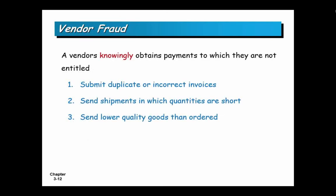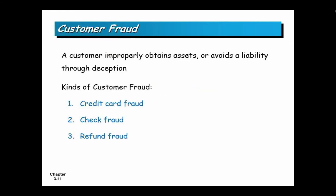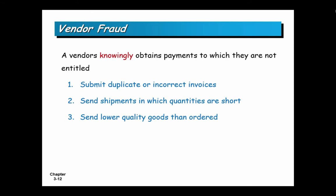Vendor fraud is when a vendor knowingly obtains payments to which they are not entitled — submitting duplicate or incorrect invoices. The key word is 'knowingly.' If done by mistake and corrected, that's not fraud. Fraud requires intent. Similarly, if a customer knowingly doesn't pay for goods received, that's fraud. Shorting quantities — delivering less than ordered but charging full price — or sending lower quality goods than expected are also forms of vendor fraud.